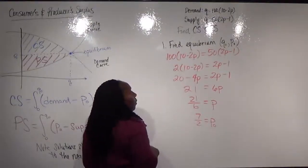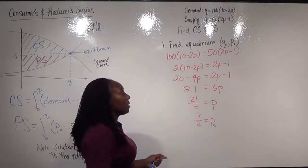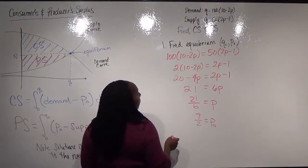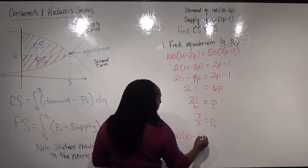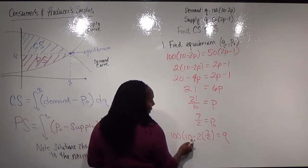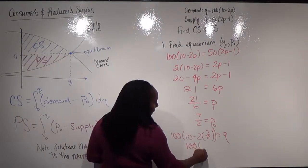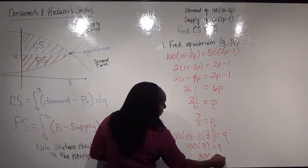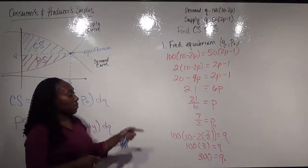Once I have my p, I need to get my equilibrium quantity. To get that, I can plug it back into either the supply or demand equation — it doesn't matter because they should be equivalent at that point. So I'm going to go ahead and plug it into the first one: 100(10 − 2 × 7/2). This gives me 10 − 7, which is 3, so 300 is going to be my equilibrium quantity.